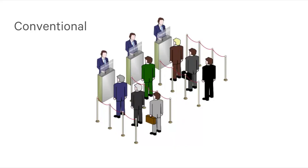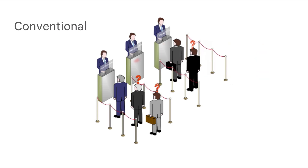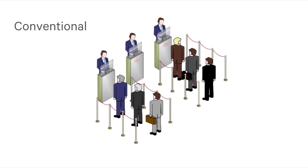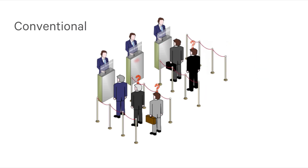We can explain the difference between conventional and trunking using a simple analogy from banking. Consider a conventional bank where specific tellers are dedicated to specific types of customers — one teller deals with ordinary household users making cash withdrawals and deposits, and another is dedicated to business accounts. At lunchtime, a long queue develops as household users overload their teller, whereas the business teller finds only one or two business customers and stands idle most of the time.